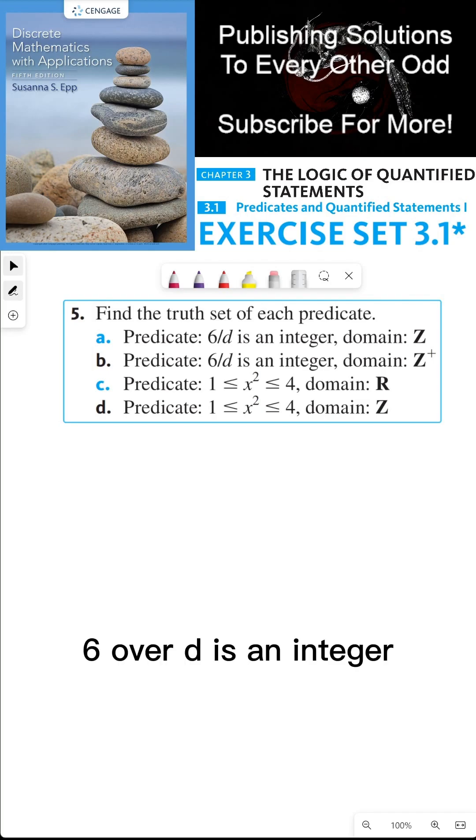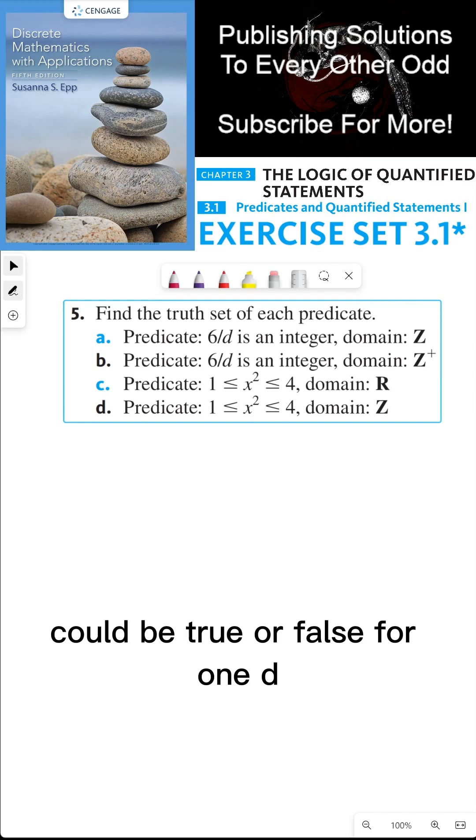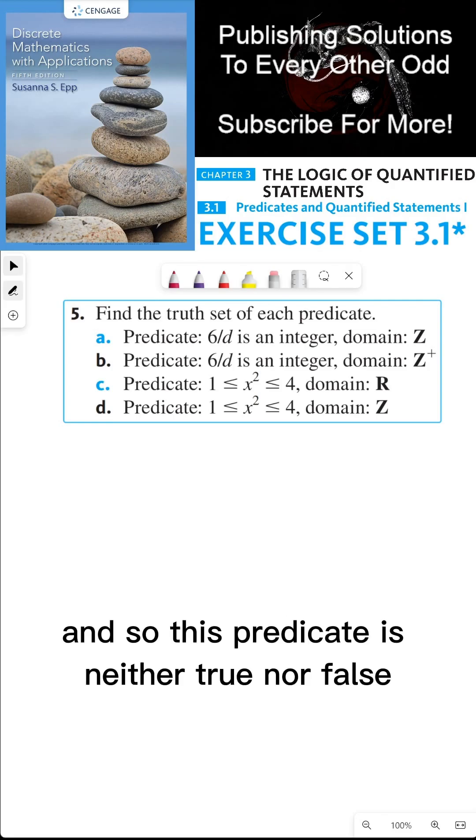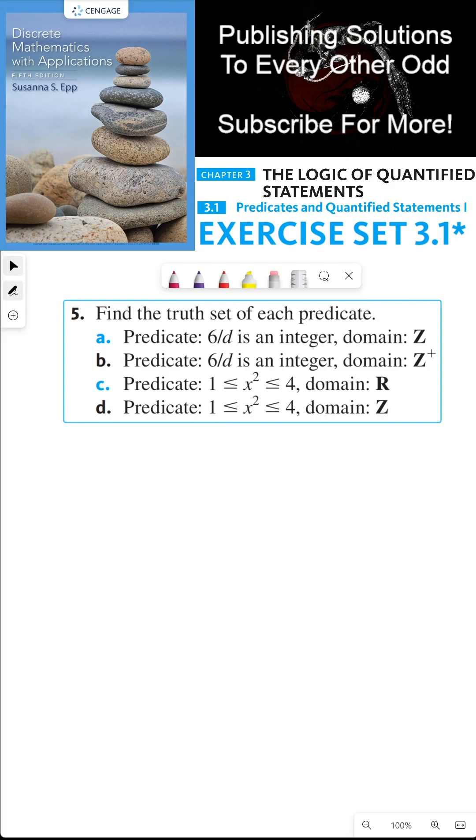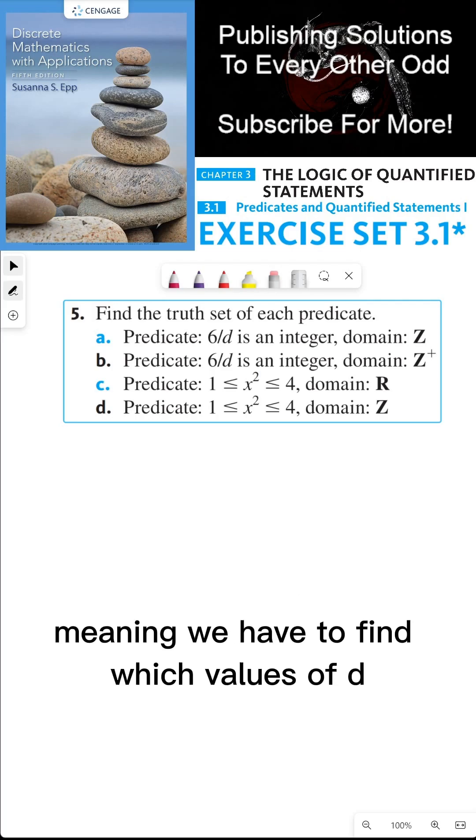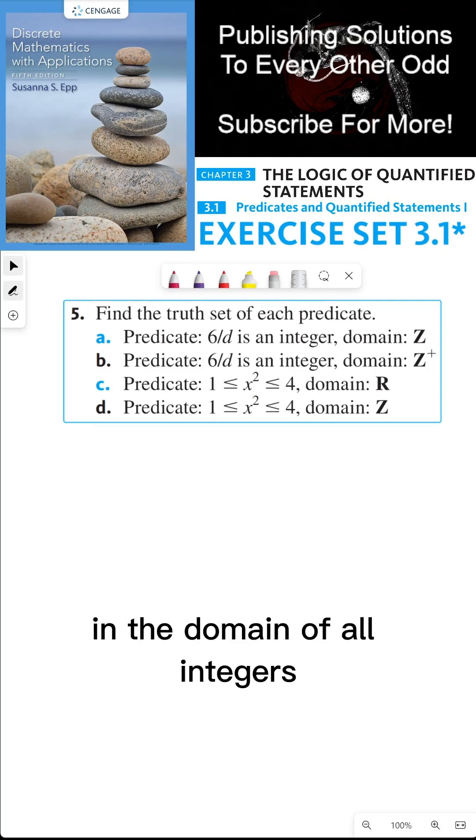6 over D is an integer. Could be true or false for one D, and it could be true or false for all D. We don't know how D is quantified, and so this predicate is neither true nor false when left by itself. So we have to find the truth set of each predicate, meaning we have to find which values of D in the domain of all integers that makes this predicate true.